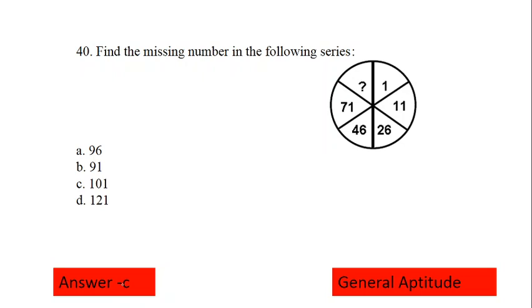Next is find the missing number in the following series. Again this is our number series question. The difference is 5, this is 25, so the next option is 30. Then 70 plus 30 gives the required answer. So 71 plus 30 is 101. Correct option is option number C.